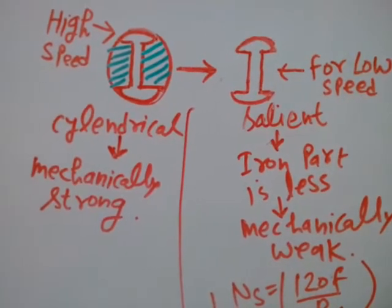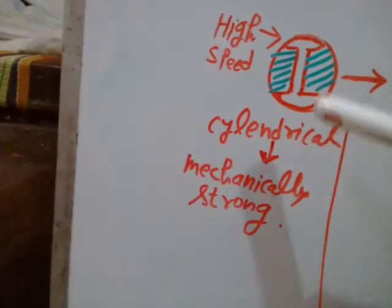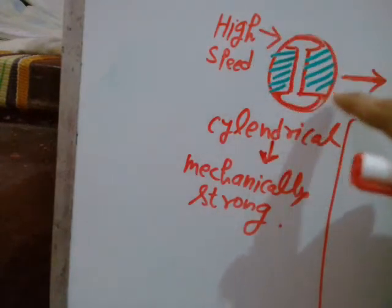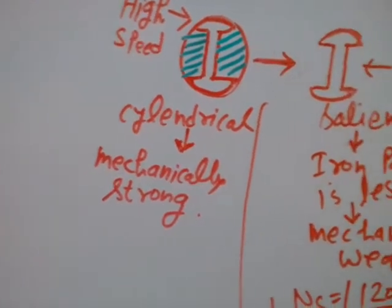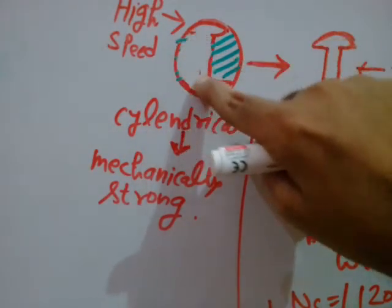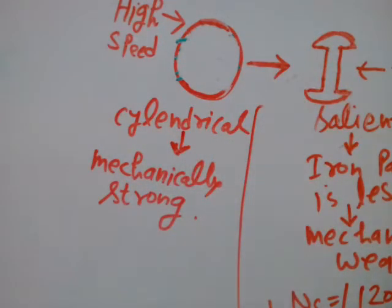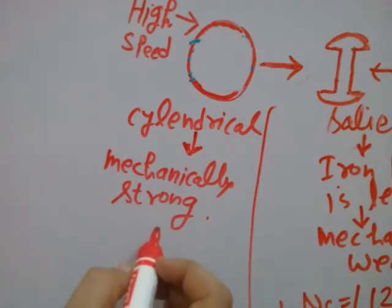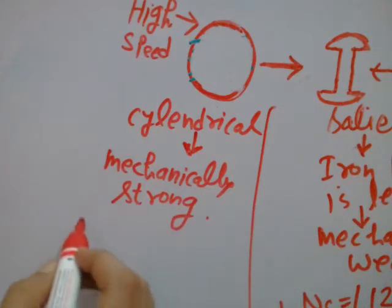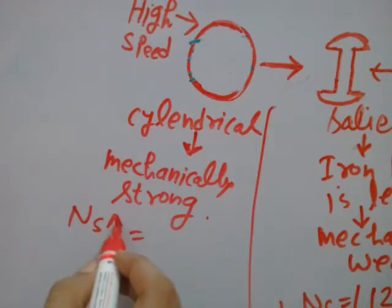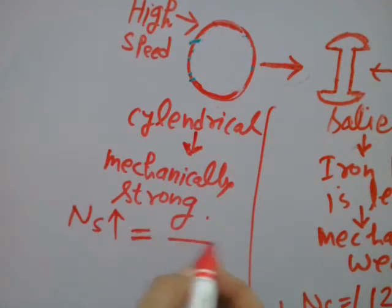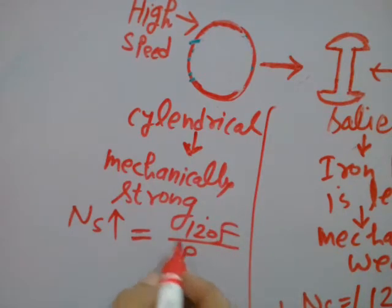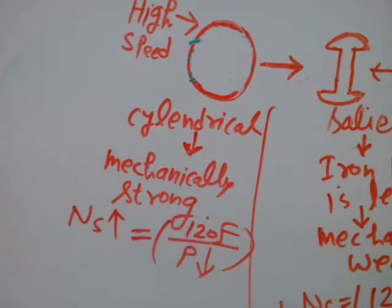Conversely, let's explain the cylindrical rotor. The cylindrical rotor — this whole complete structure is cylindrical, so it is mechanically strong. That means you can operate this cylindrical rotor even at high speed. If the speed is high, then the number of poles will definitely be less.